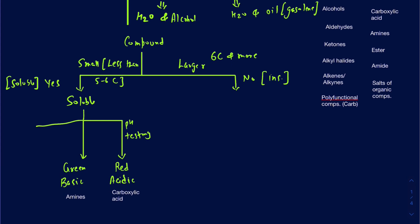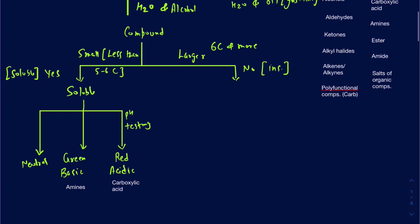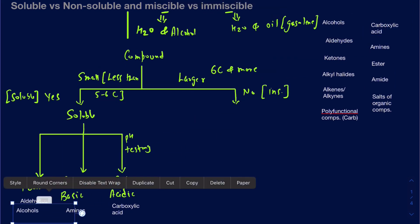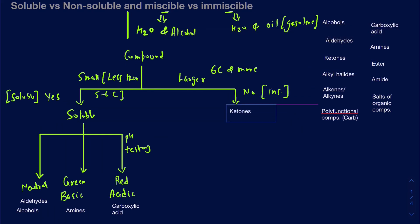Anything that gives you a neutral pH — that doesn't really change the color of the litmus paper or pH paper — means they are neutral. In that neutral category, we are looking at functional groups like aldehydes, alcohols, and ketones.